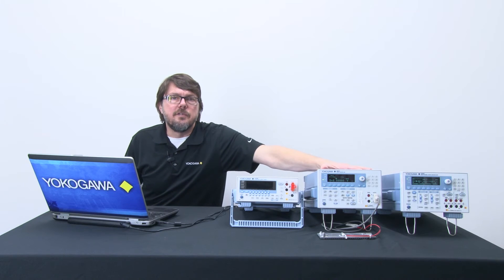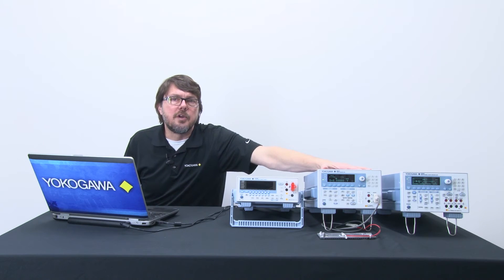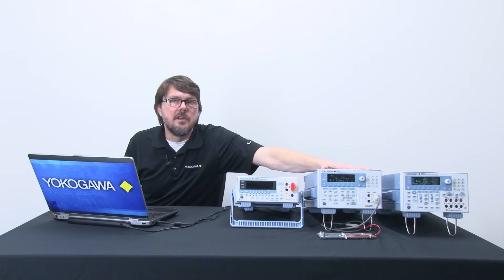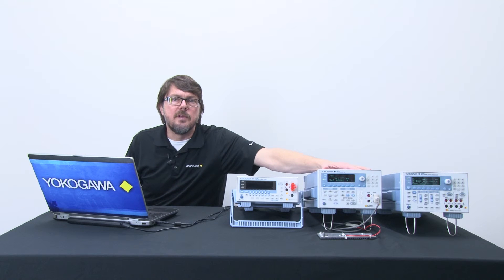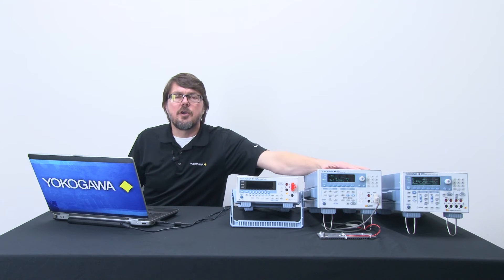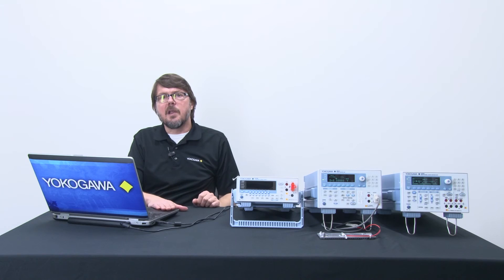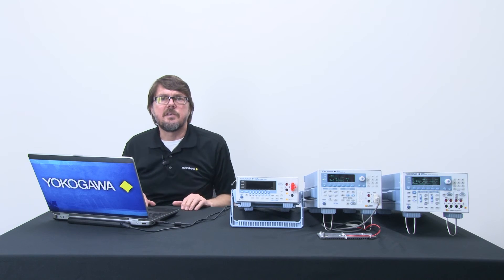The source measure unit this time is a more capable Yokogawa GS610. For my LED, it has a greater output current, up to 3.2 amps, and it works with an easy to use Curve Tracer software, which I've installed on my laptop. Okay, let's get started.